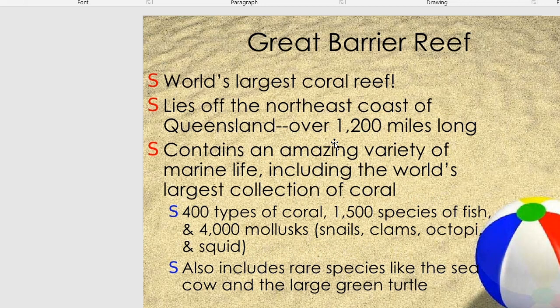The Great Barrier Reef is considered the eighth wonder of the world. It is the world's largest coral reef, located off the northeastern coast of Queensland, over 1,200 miles long from north to south. It contains an amazing variety of marine life, including 400 types of coral and 1,500 species of fish, as well as rare species like the sea cow and large green turtles.